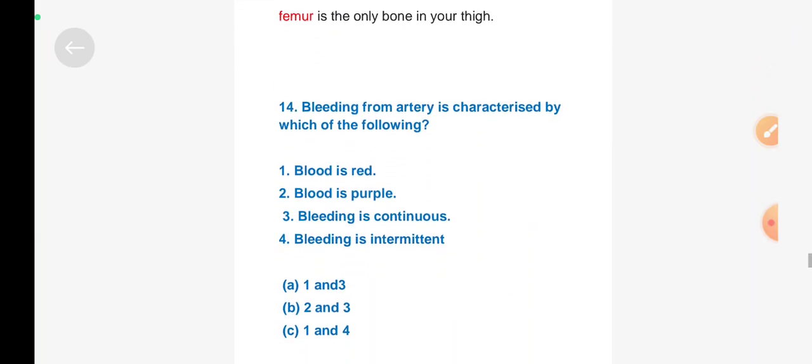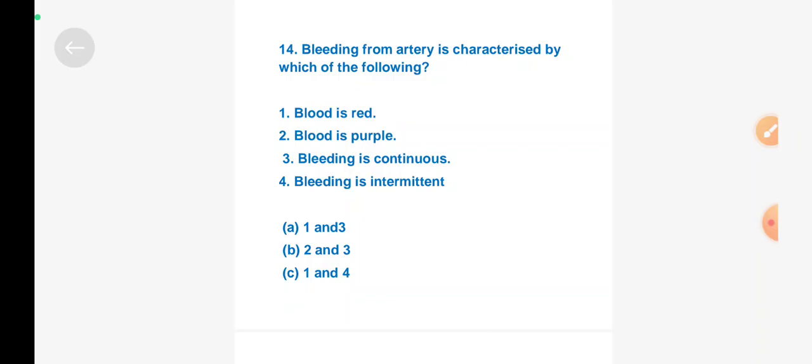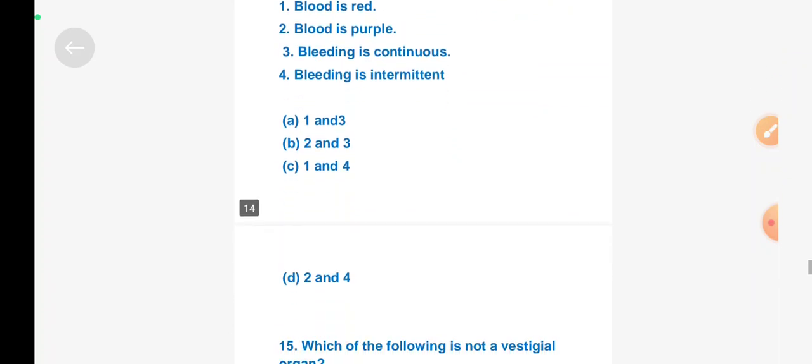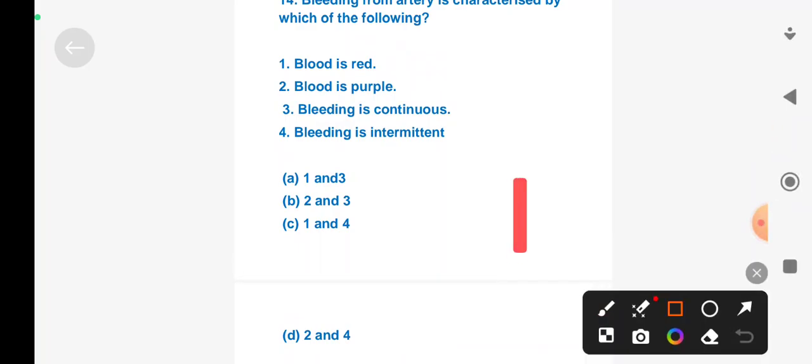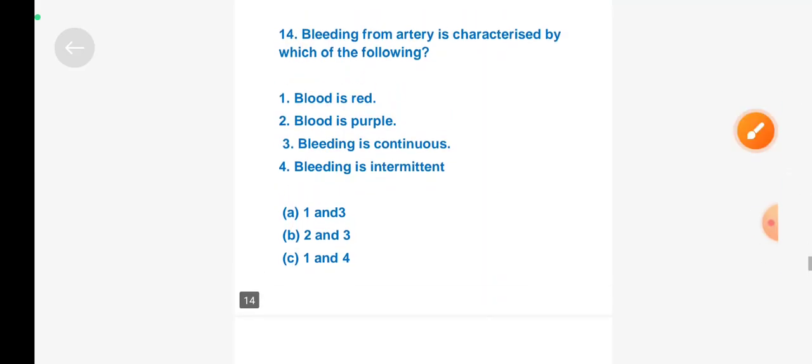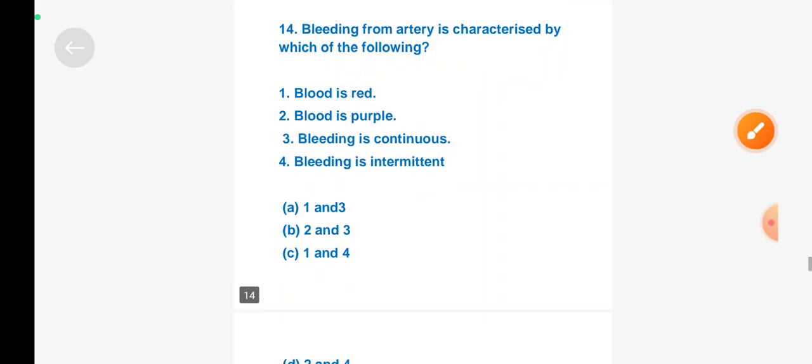Next question: The bleeding from artery is characterized by which of the following? Option A: blood is red, Option B: blood is purple, Option C: bleeding is continuous, Option D: bleeding is intermittent. Which is correct? Option A: 1 and 3, Option B: 2 and 3, Option C: 1 and 4, Option D: 2 and 4. Right answer is Option B, 2 and 3.